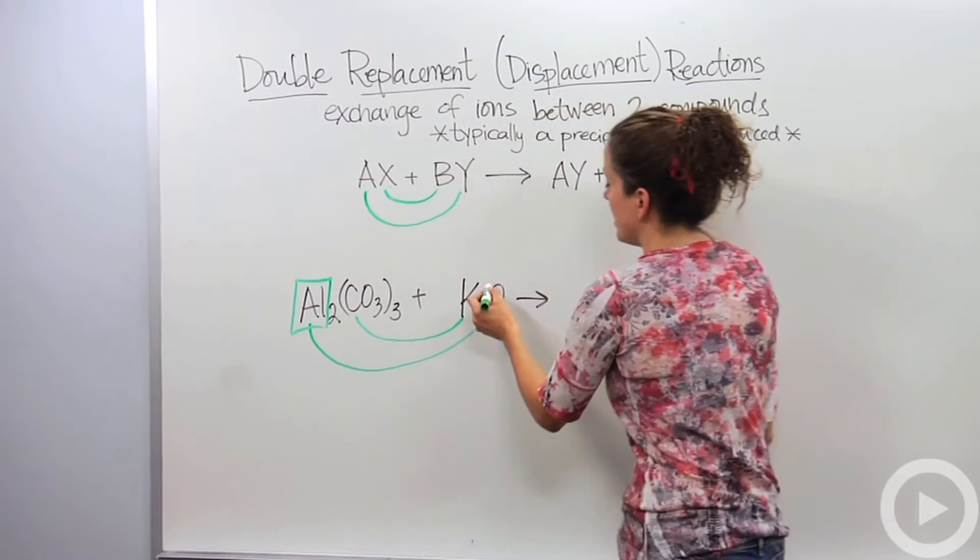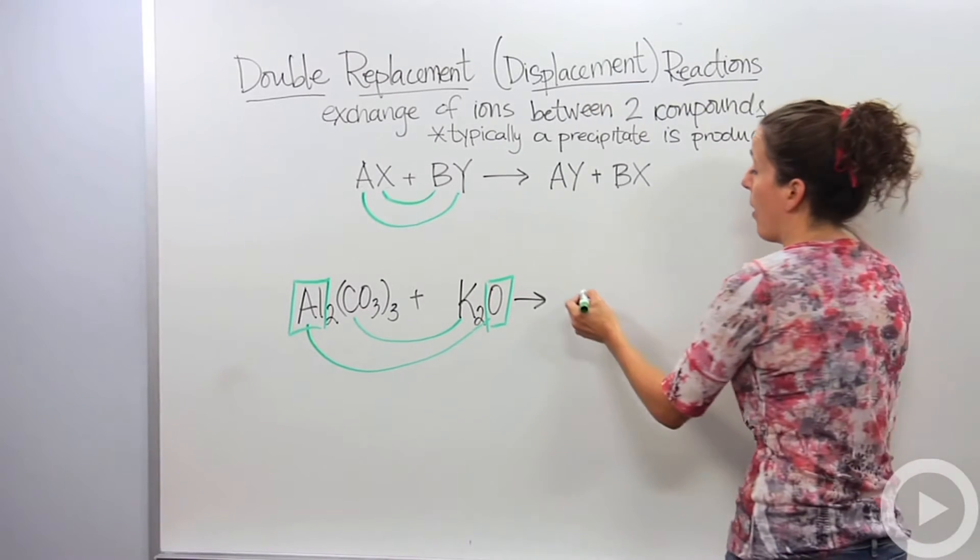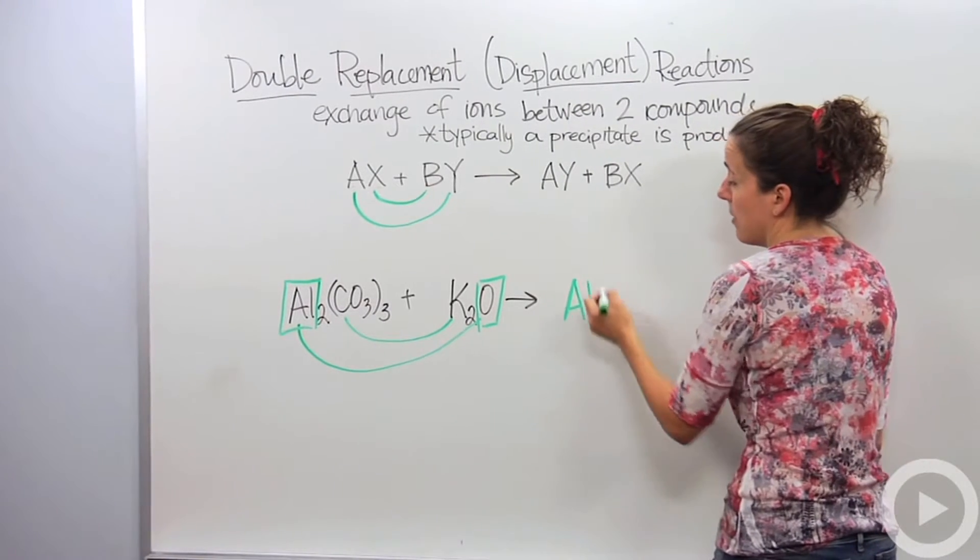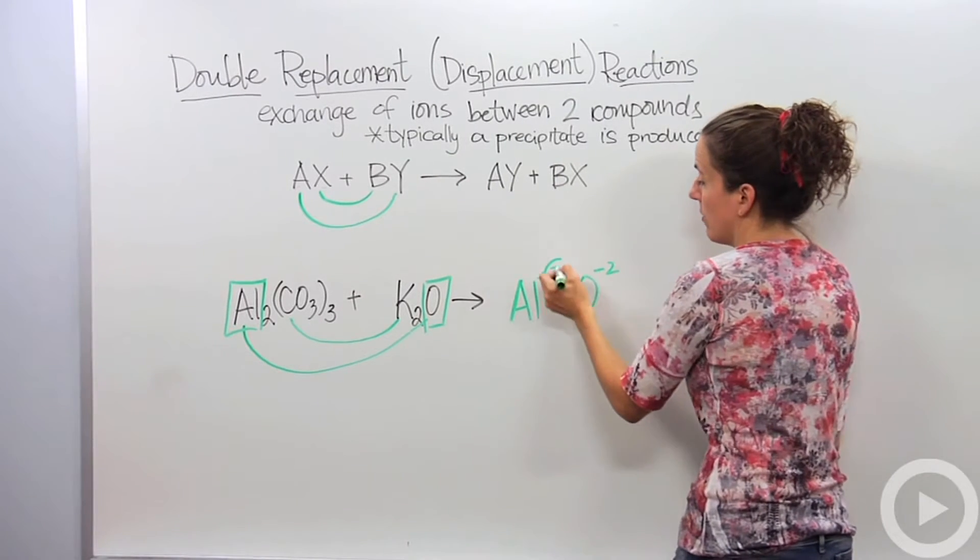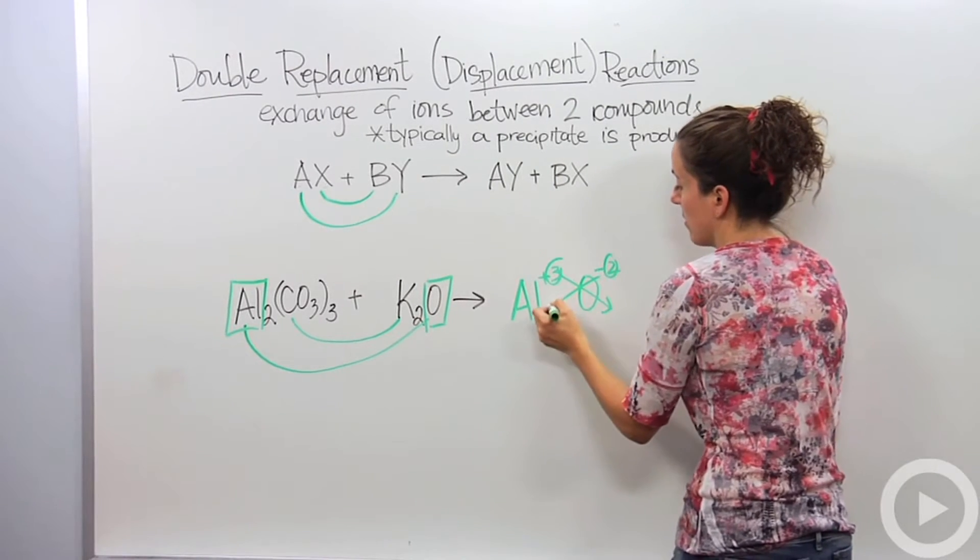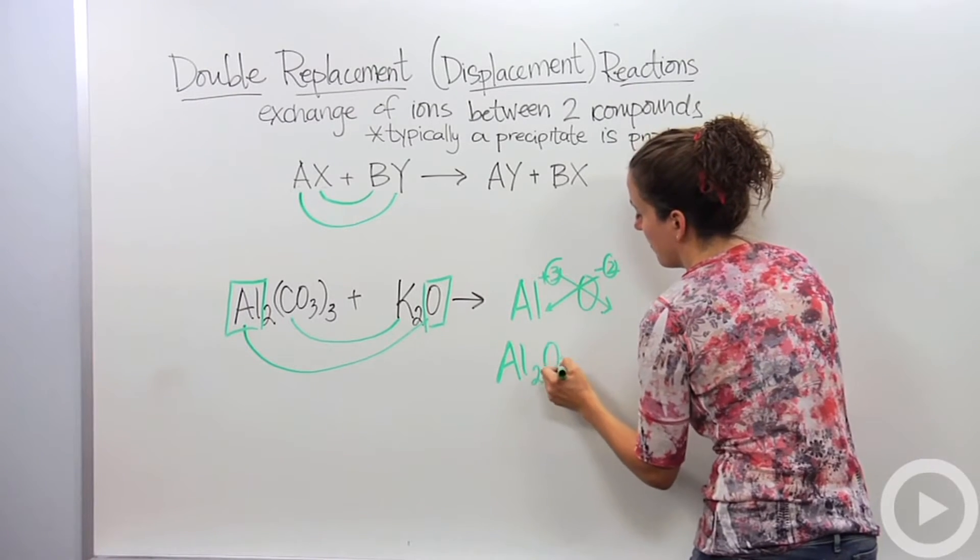So we're just going to deal with the metal. The aluminum itself is going to bond with the oxygen. So how do they come together? Well, aluminum makes a plus 3 ion, oxygen makes a minus 2, cross those to make it even, and we come up with a new product, Al2O3.